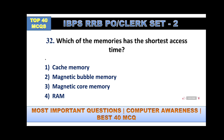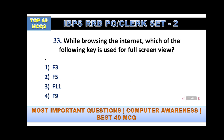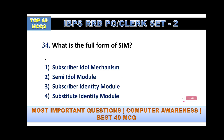While browsing the internet, which key is used for full screen view? The answer is F11 — option number three. F5 is used for refresh. What is the full form of SIM? Options are Subscriber Idle Mechanism, Semi Idle Module, Subscriber Identity Module, or Substitute Identity Module. The answer is option number three, Subscriber Identity Module.